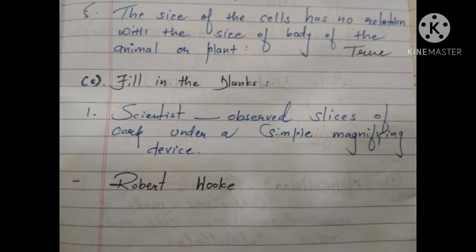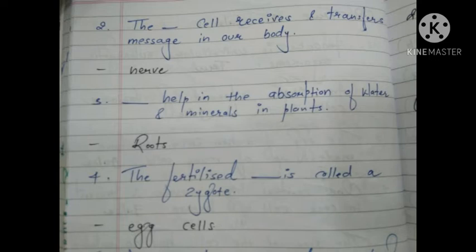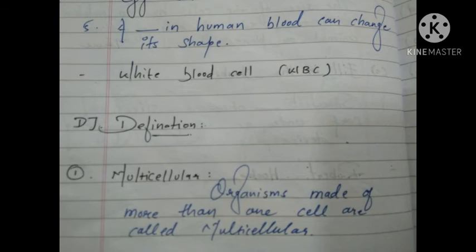Now moving towards Fill in the Blanks. First: scientist Robert Hooke observed a slice of cork under a simple magnifying device. Second: nerve cells receive and transfer messages in our body. Third: roots help in the absorption of water and minerals in plants. Fourth: the fertilized egg cell is called a zygote. Fifth: WBC, that is white blood cells, in human blood can change their shape.